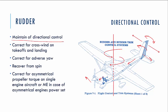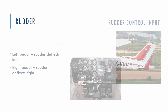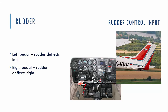We use the rudder on takeoffs and landings and in flight to correct the position of the aircraft in case of yawing — for example, due to asymmetrical propeller torque on powerful engine aircraft, or asymmetrical engine power on multi-engine aircraft. The rudder is also used to recover from a spin. Details will be discussed in the Principles of Flight section. When we push the left pedal the rudder deflects left; right pedal deflects right.